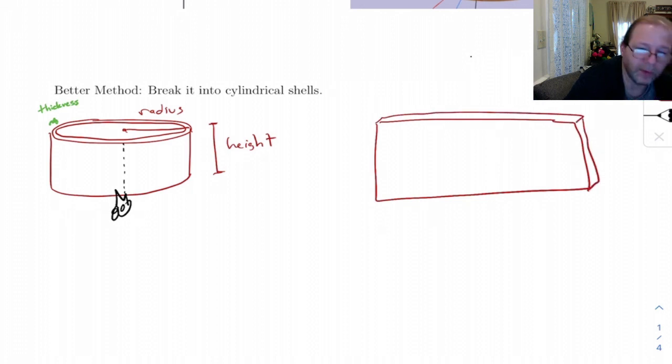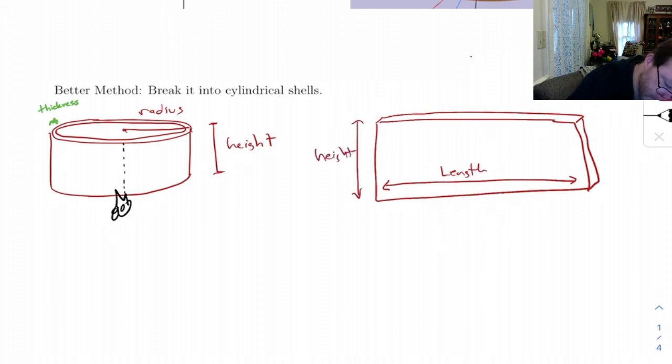Now, this is basically a rectangle. You might say, is one side of it longer than the other because of the circle? And the answer is no, because we're going to assume that the thickness shrinks down to zero. But if you want to find the volume of this thing, you want to take the length times the height times the thickness.